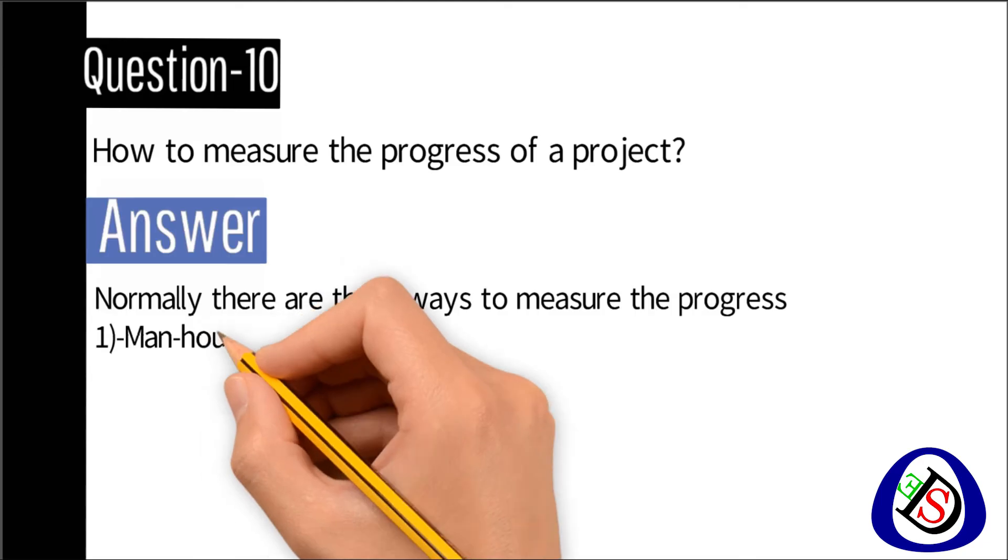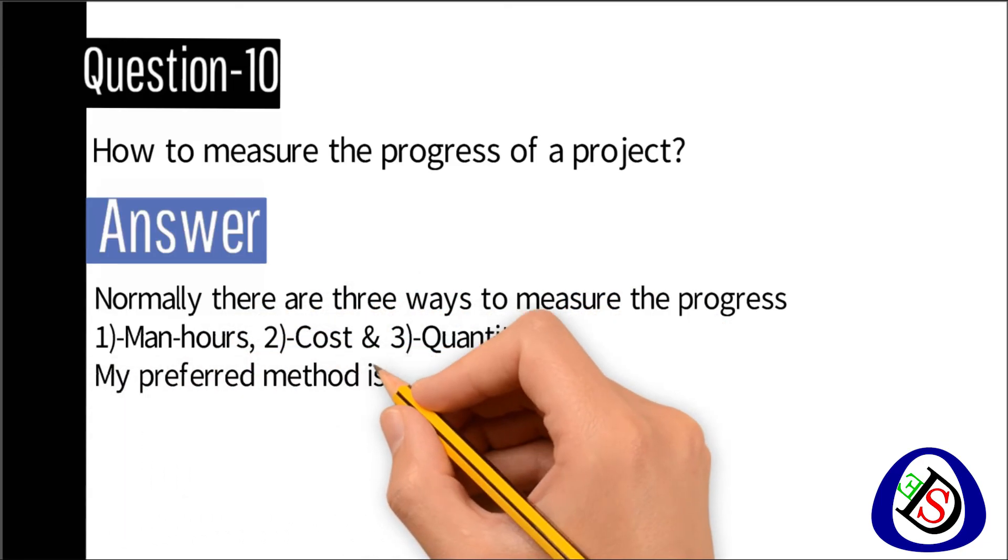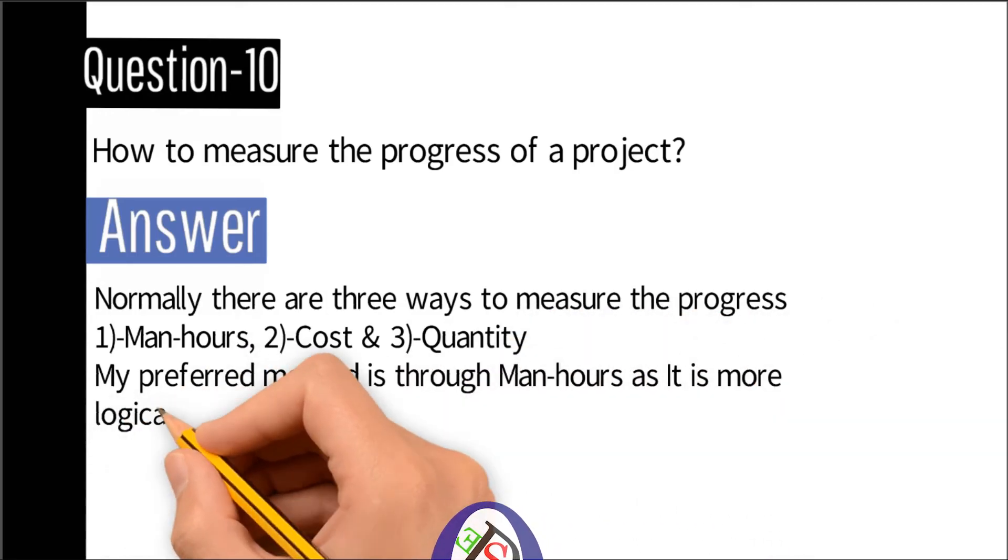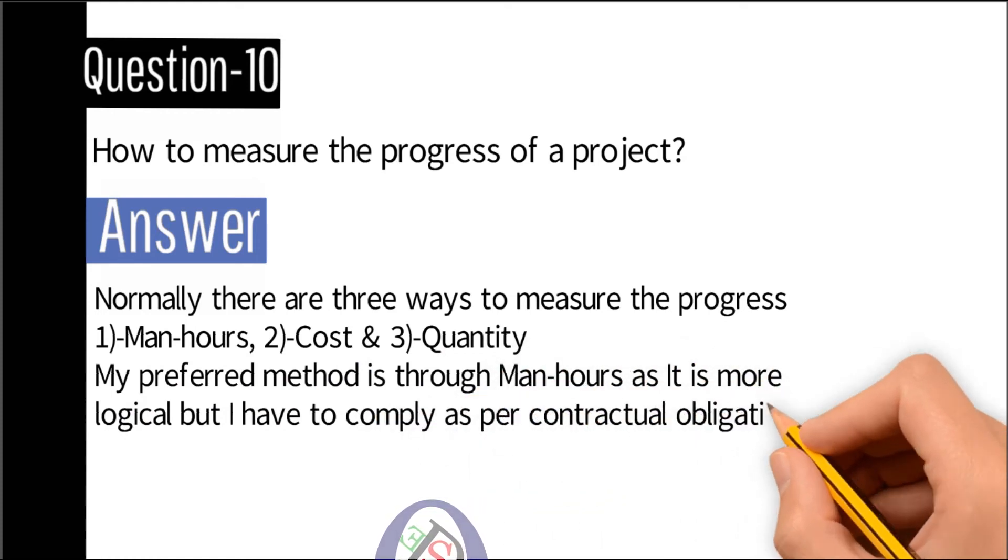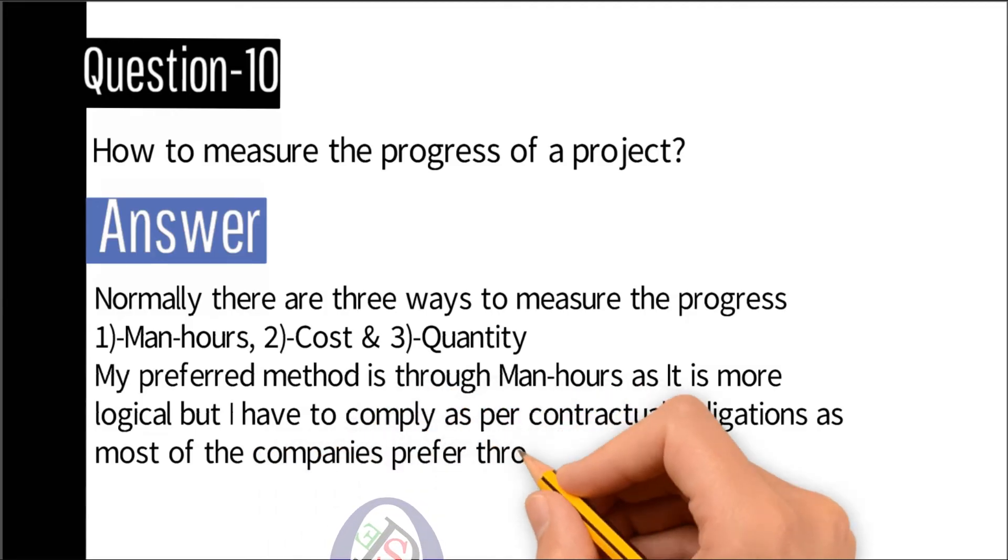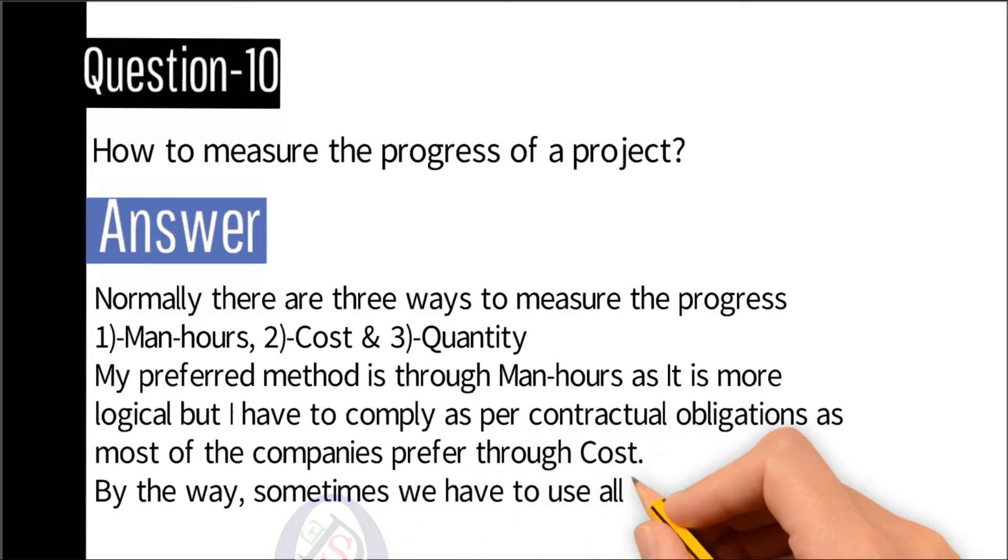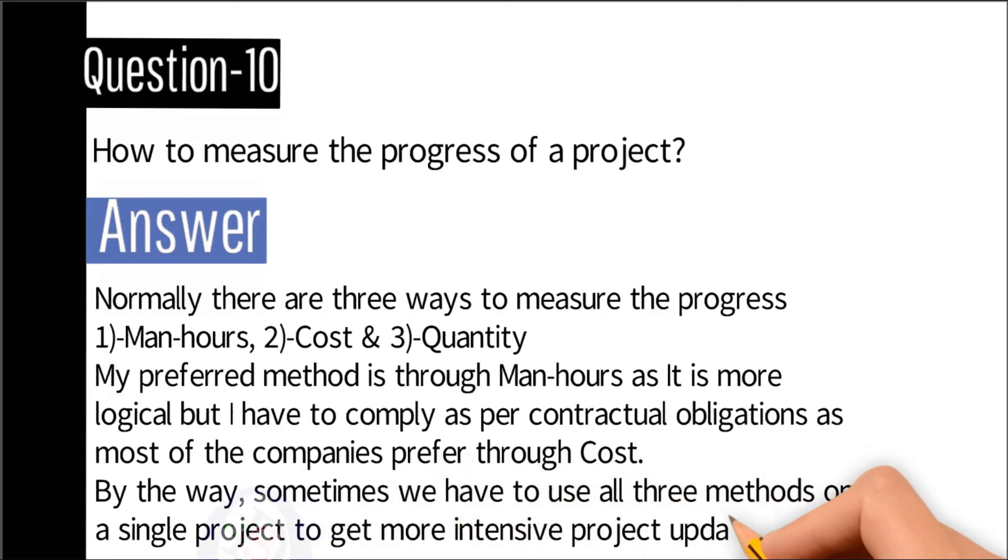One: man hours. Two: cost. Three: quantity. My preferred method is through man hours as it is more logical, but I have to comply as per contractual obligations as most companies prefer through cost. By the way, sometimes we have to use all three methods on a single project to get more intensive project updated status.